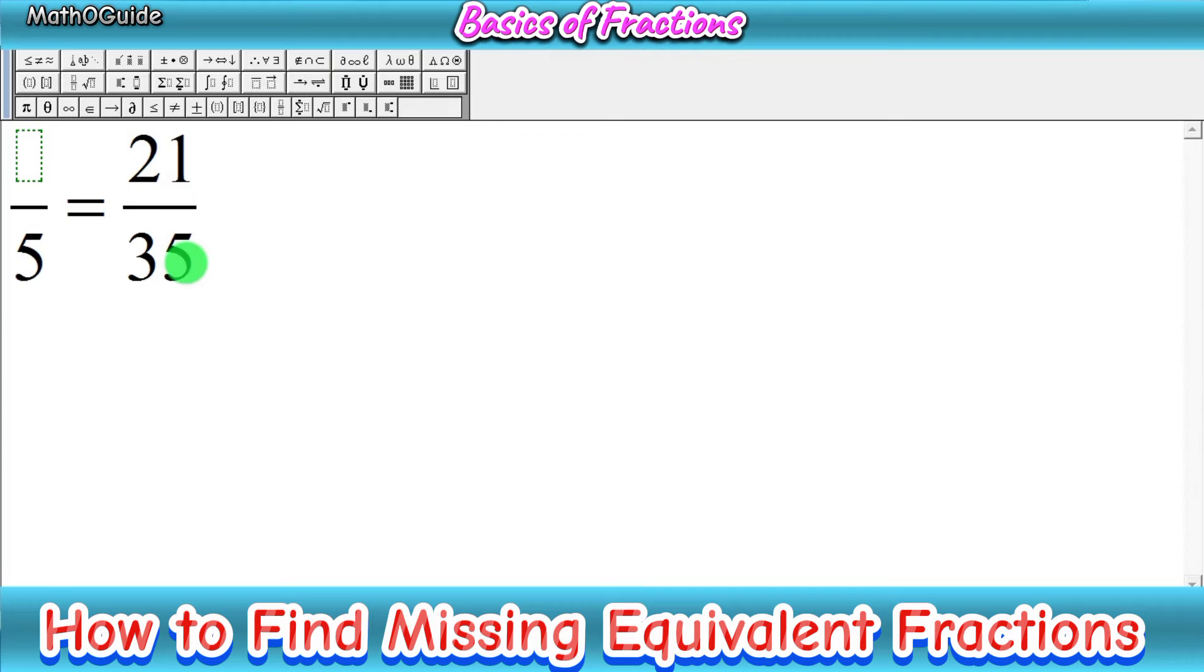You know that 35 divided by 7 we will get 5. So 35 divided by 7 we will get 5. Similarly, you have to divide the numerator of the second fraction with 7, so you will get the missing number. 21 divided by 7, you know that we will get 3.